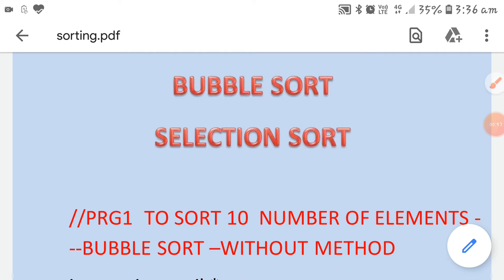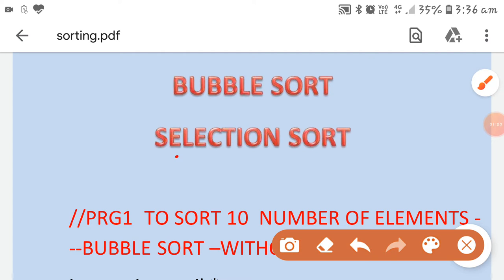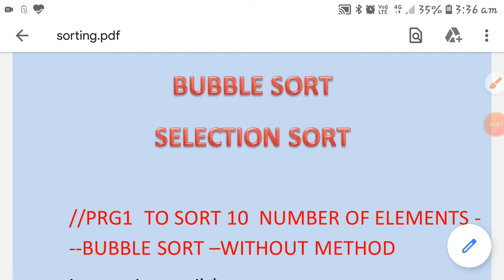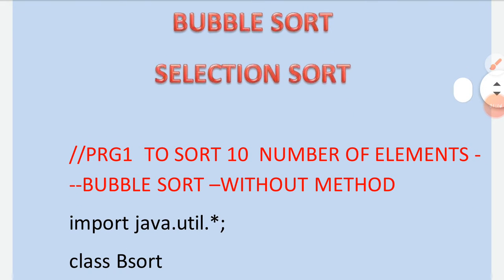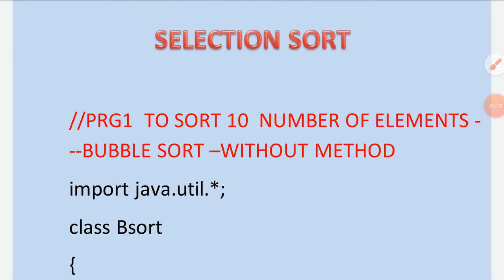There are two programs of sorting: bubble sort and selection sort. I will first show you the program of bubble sort — it is a very important program. From searching and sorting, one program will surely come in your ICSE exam. It is the most important topic of arrays, and one program always comes in the final ICSE exam — either from sorting or from searching. Total four programs are there.